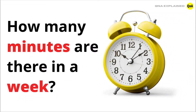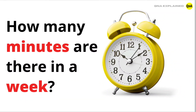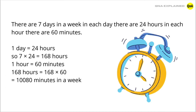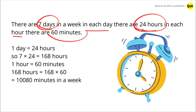How many minutes are there in a week? There are 7 days in a week. In each day, there are 24 hours. In each hour, there are 60 minutes. 1 day is equal to 24 hours.